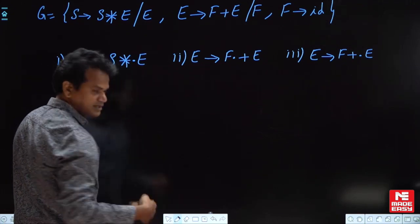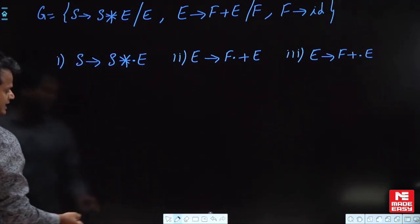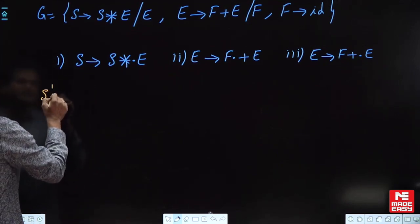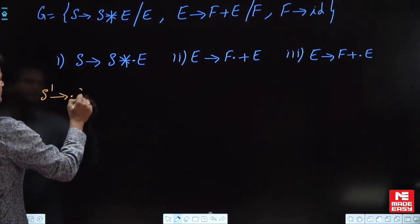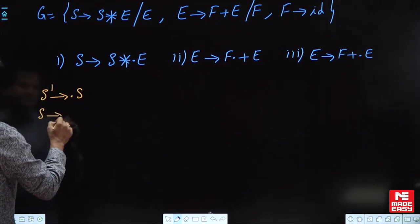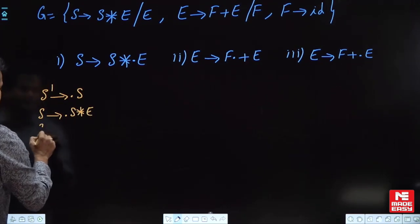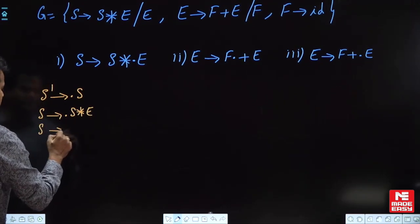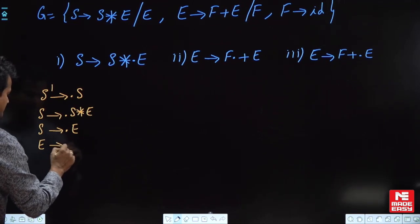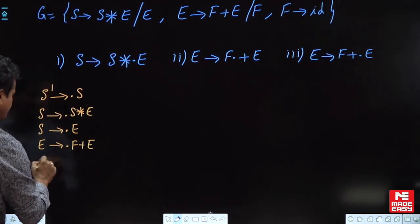LR(0) items means SLR(1) parsing. We must write the canonical set of items. Initially: S'→·S, and we must add every production of S — S→·*E and S'→·E.